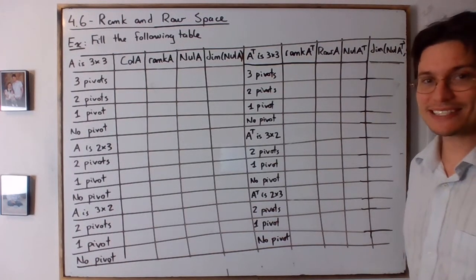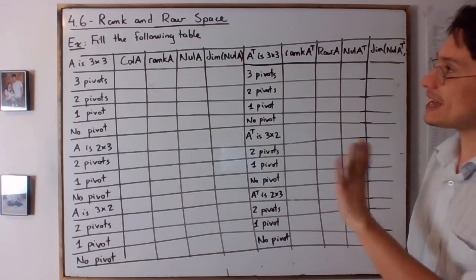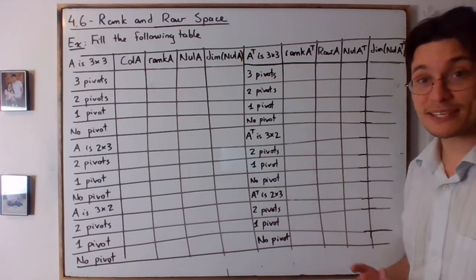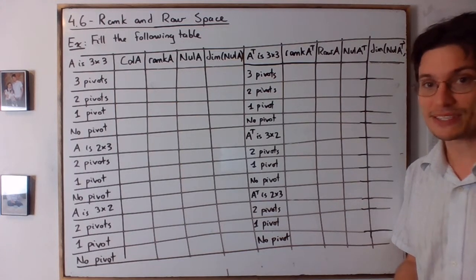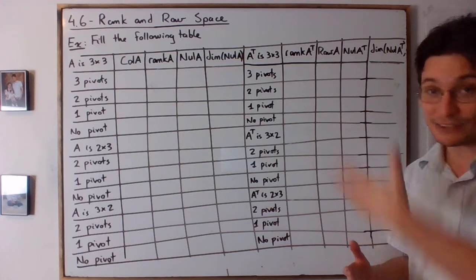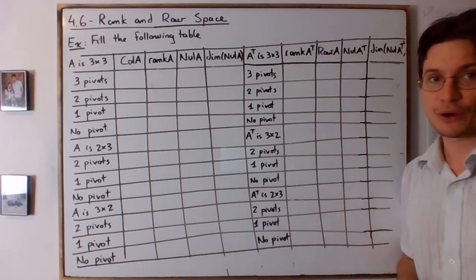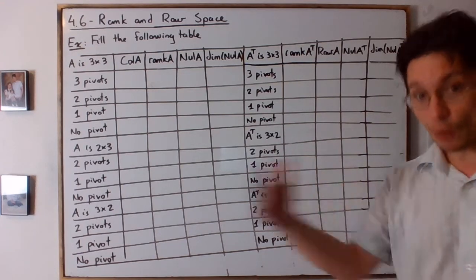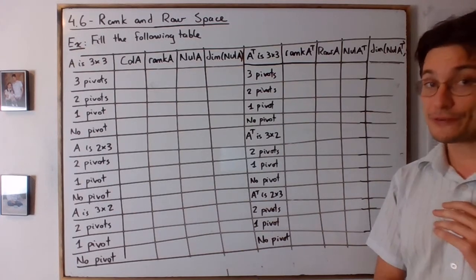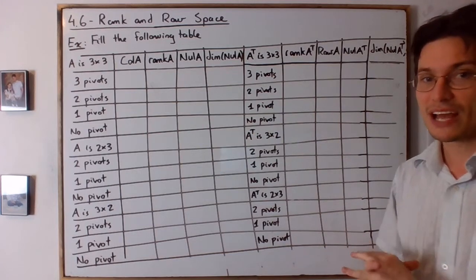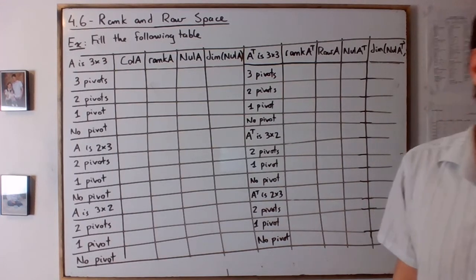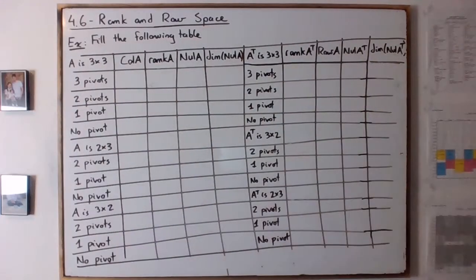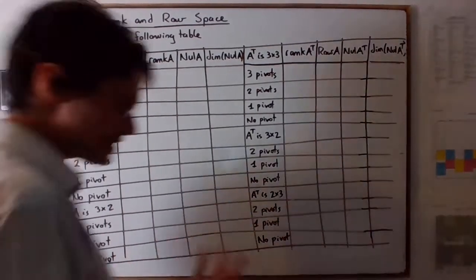Good evening, linear algebra students. This is pretty much the last problem of Section 4.6, Rank and Row Space. I have a huge suggestion: do this exercise yourself. Look at the YouTube video at the very least at the end to see if everything is filled in correctly. Fill it yourself, then go back to check your answers. It's a big table, so it's going to be challenging. I'm going to use an extra color to fill this table.